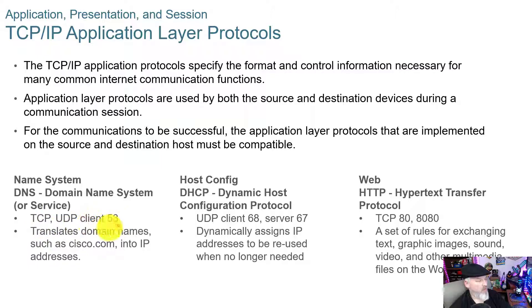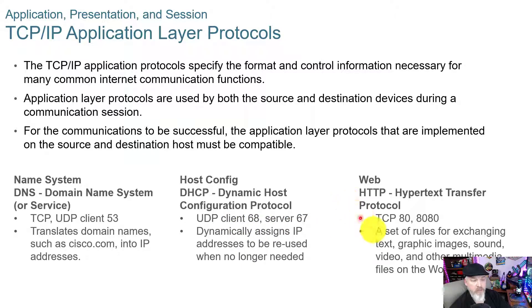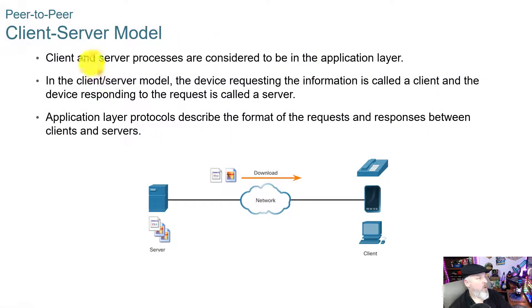DHCP, or dynamic host configuration protocol, uses UDP on client port 68 and server port 67. Web traffic uses HTTP on TCP port 80 or 8080, and then port 443 which is the encrypted HTTPS protocol.